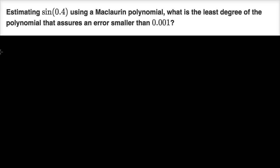So what are we talking about here? We could take some function and estimate it with an nth degree Maclaurin polynomial — or more generally a Taylor polynomial, but let's say this is an nth degree Maclaurin polynomial. This isn't going to be a perfect approximation; there's going to be some error, some remainder. We could call this the remainder of that nth degree Maclaurin polynomial, and it's going to be dependent on any given x.